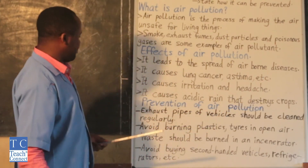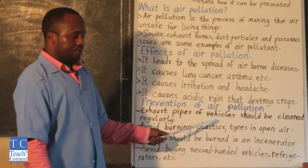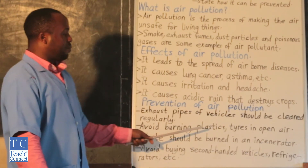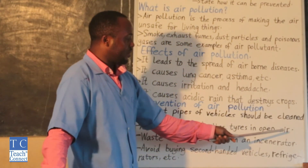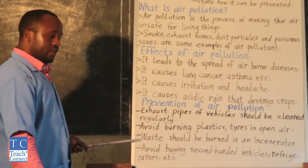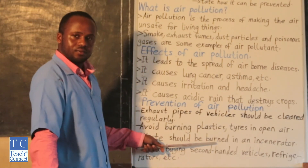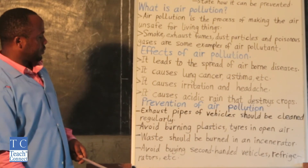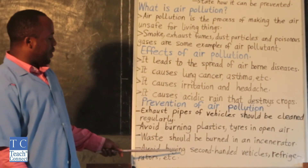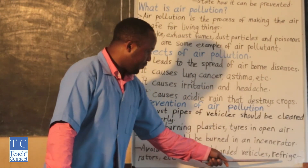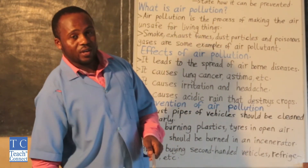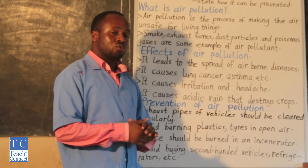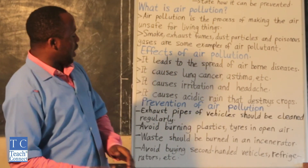Prevention of air pollution. The first point: exhaust pipes of vehicles should be cleaned regularly. The second point: avoid burning plastic tires in open air. The third point: waste should be burned in an incinerator. The fourth point: avoid buying second-hand vehicles, refrigerators, etc. So these are some of the ways that we can use to prevent air pollution.